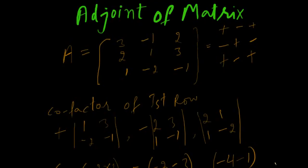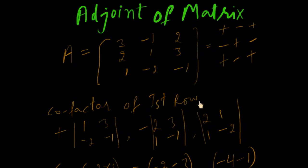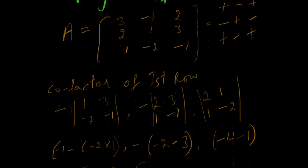In this tutorial we will calculate the adjoint of a matrix. Suppose A is a matrix of third order. You should remember the plus and minus sign pattern. For the first row's cofactor, plus minus plus. For the second row, minus plus minus. For the third row, plus minus plus. This will make it easy to calculate the adjoint of matrix. So let's start by calculating the cofactor of the first row.